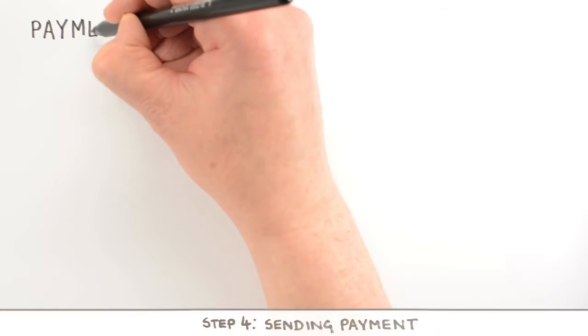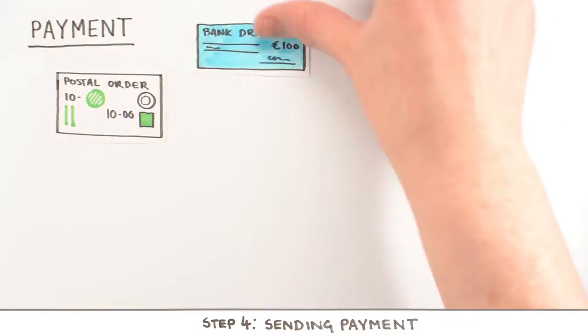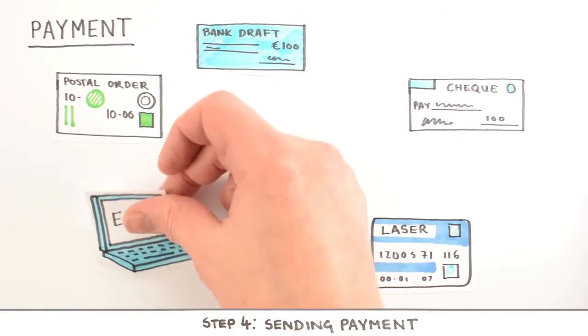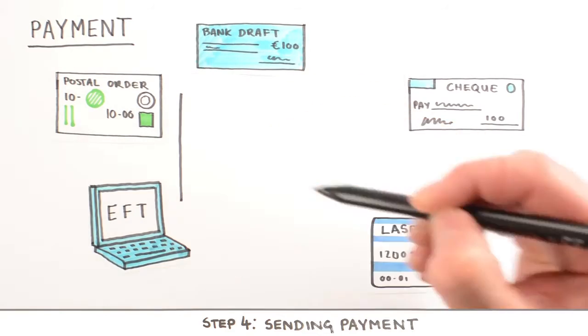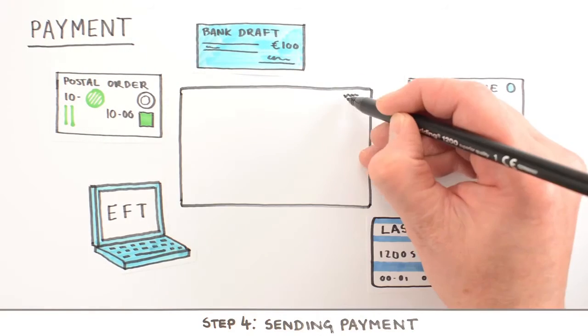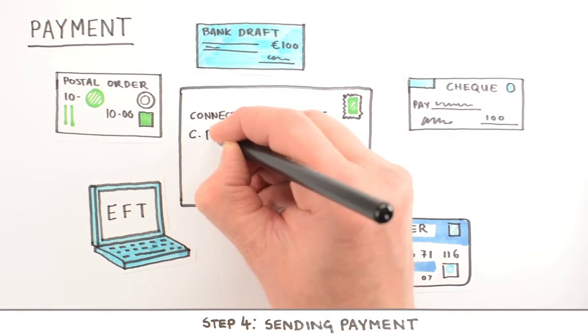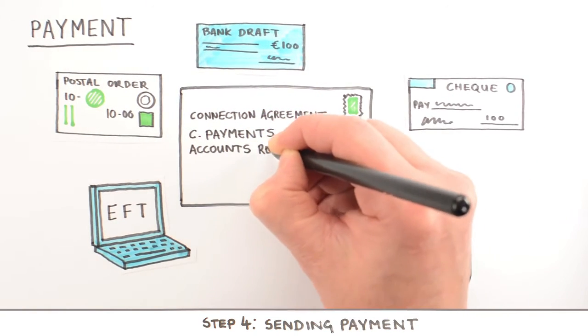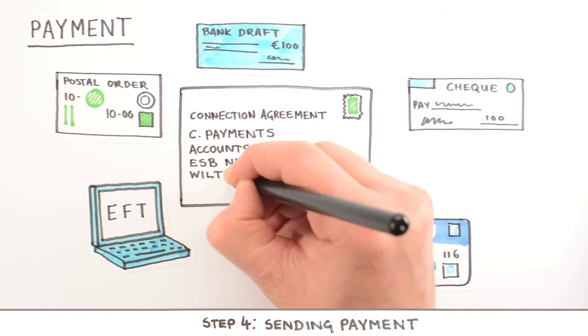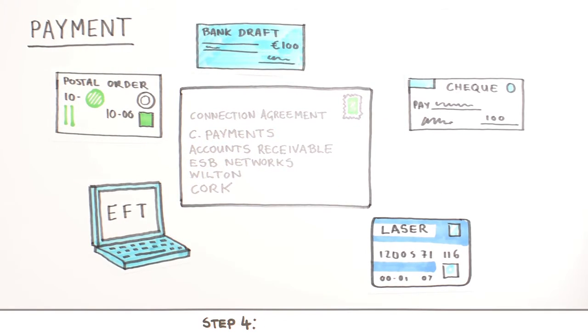Payment can be in the form of Postal Order, Bank Draft, Check, Laser, or EFT, and must be returned in the envelope provided with your invoice and signed Connection Agreement. Payments should be returned to Accounts Receivable in ESB Networks, Wilton Cork.